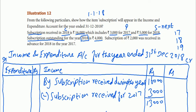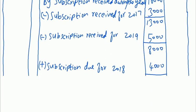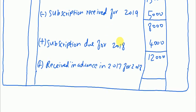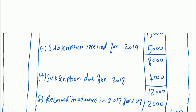When someone pays in advance, the amount is for the next year — just like paying book fees in advance. So in 2017, Rs.2,000 was received as advance for 2018. We add this Rs.2,000 to Rs.12,000, giving a final answer of Rs.14,000 as the subscription amount to appear in the income and expenditure account for 2018.